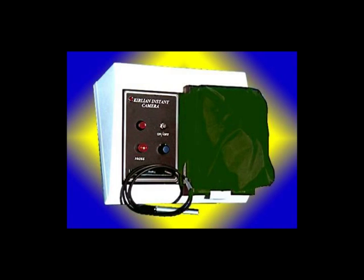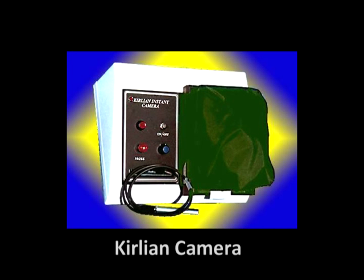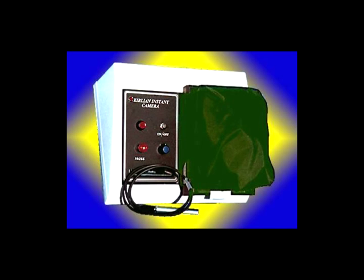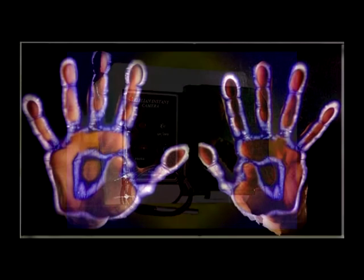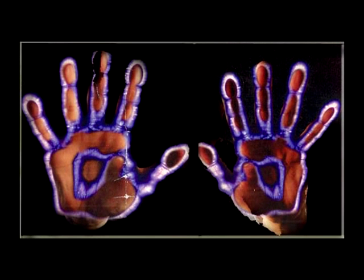One of several ways you can test light as an electron donor to the human body is with Kirlian photography. A Kirlian camera is an electron camera and can be used as a battery tester for the human body. It is possible to check the electrical charge of your body in many ways, including blood, saliva, and urine, but Kirlian photography is a very visual demonstration.